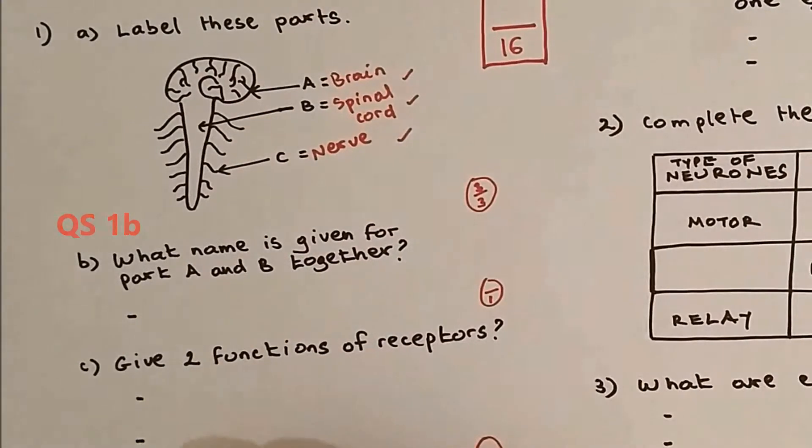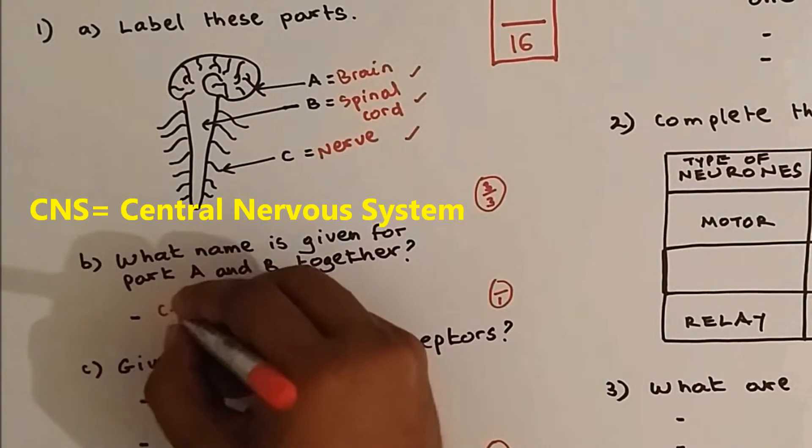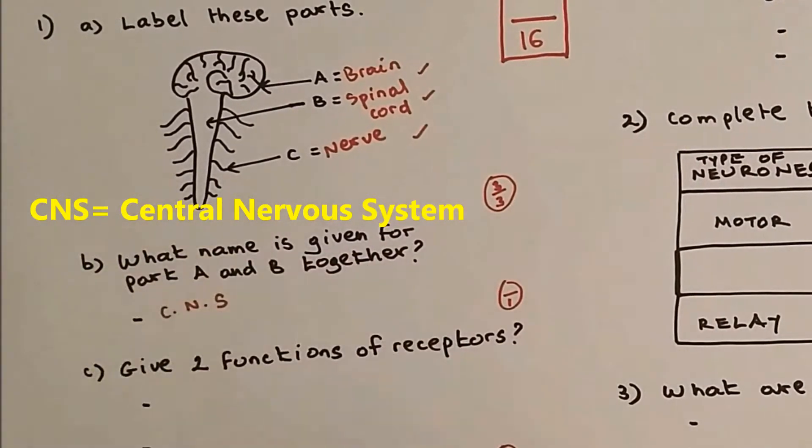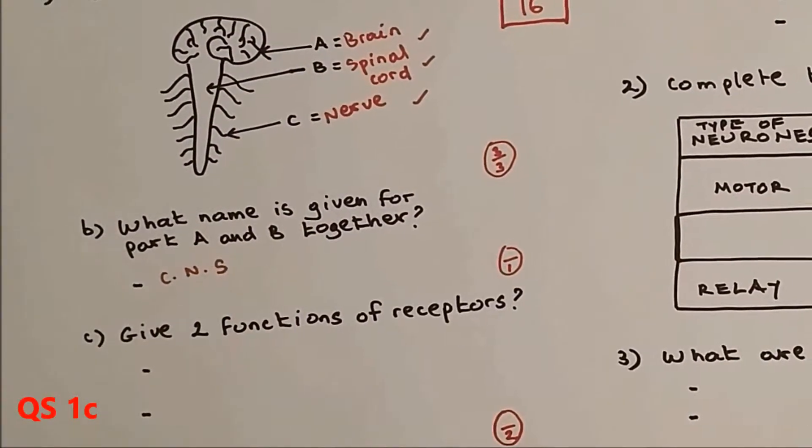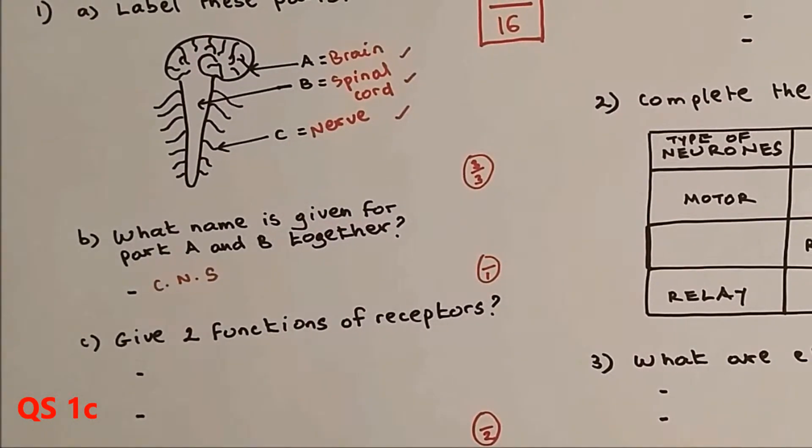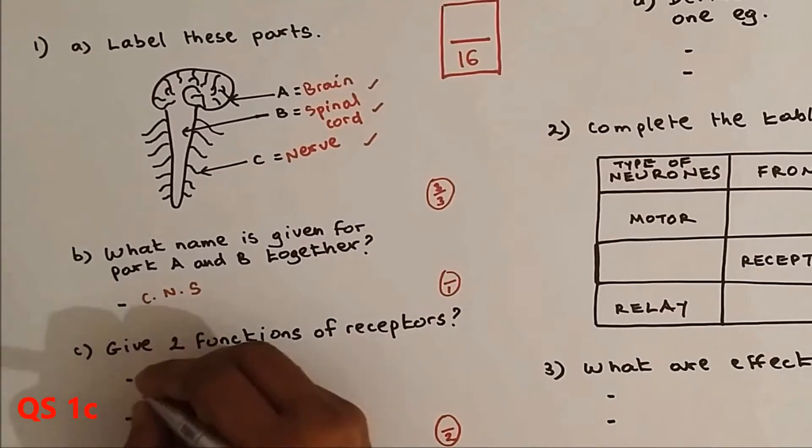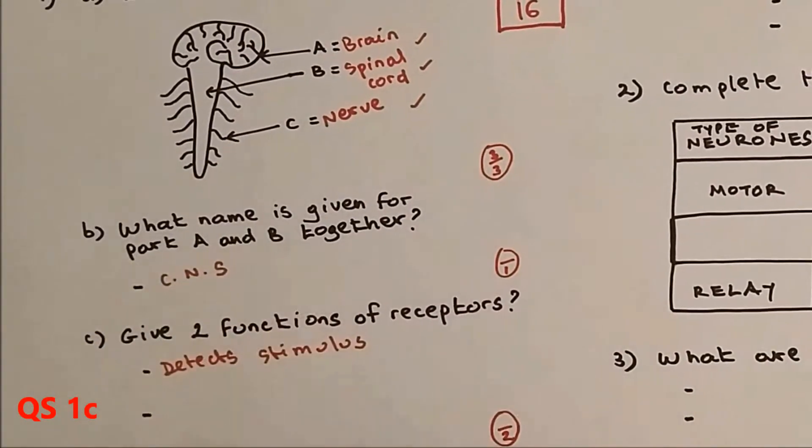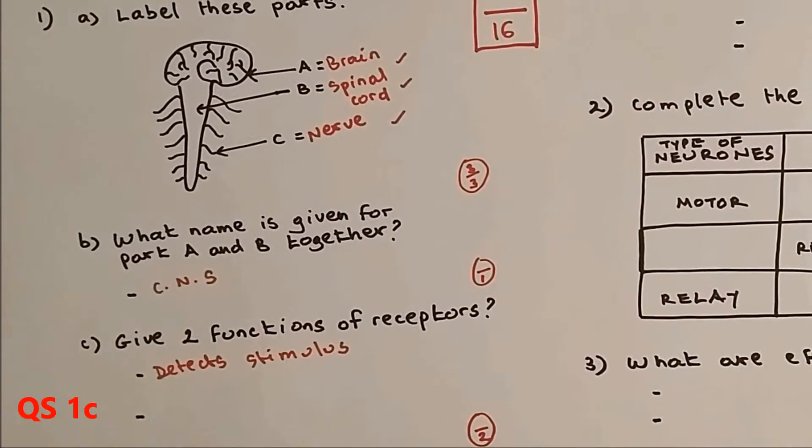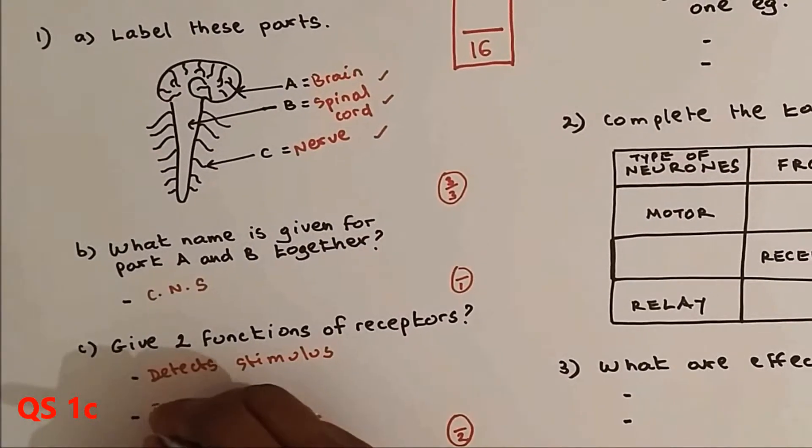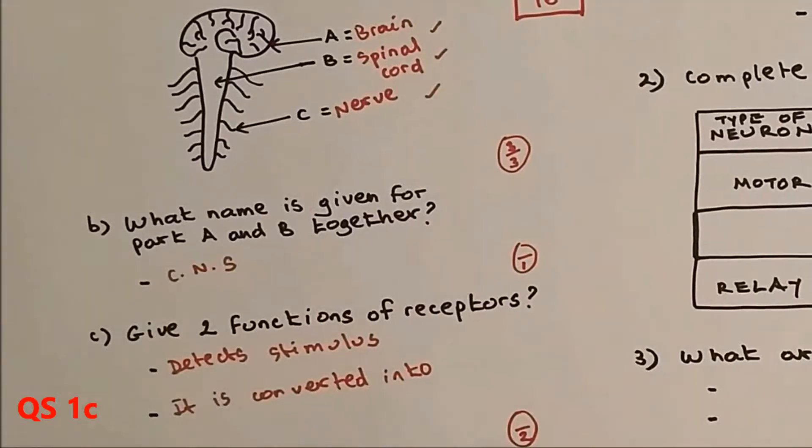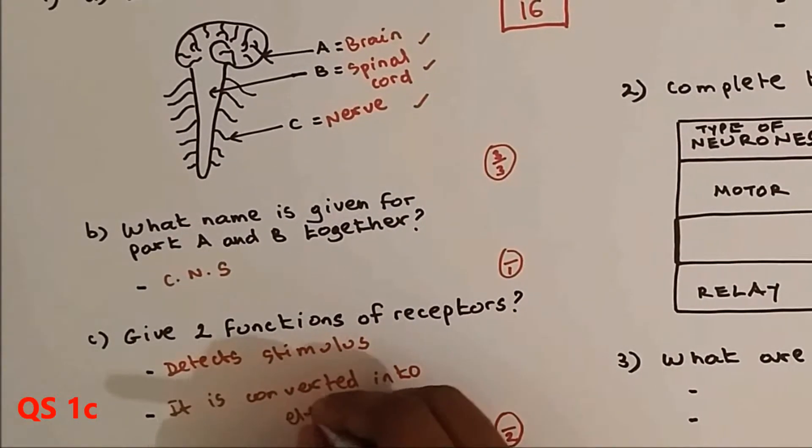Question C: give two functions of receptors. The function of receptor is to detect stimulus, and once the stimulus has been detected it is converted into electrical impulse. Two points, two out of two.